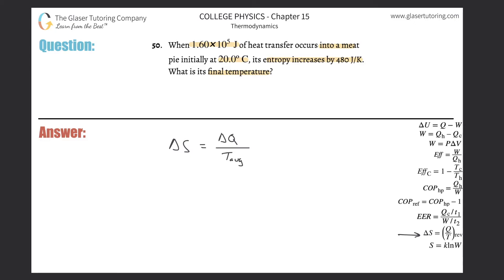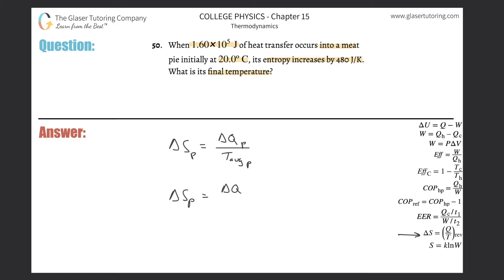In this particular case, we're talking about what's the final temperature of the meat pie. So if I want to find the final temperature, I need to know the change in entropy of the meat pie, the change in heat energy gained or lost, and then the average temperature. Let's expand on what we mean by average temperature.